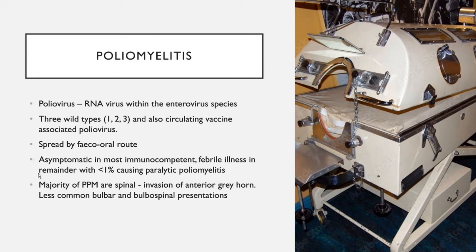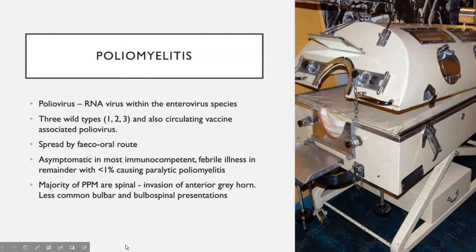The majority of these cases are of a spinal subtype, and these occur where there's viral invasion and damage to the anterior grey horn. Less commonly, you can get bulbar and bulbospinal presentations. This picture is of an iron lung, which was negative pressure ventilation used for patients who got respiratory muscle weakness.